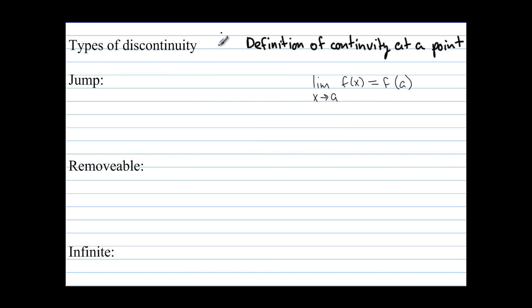We're going to talk about the types of discontinuity, but first I want to give the definition of continuity at a point. The definition of continuity means that we have lim(x→a) f(x) = f(a).